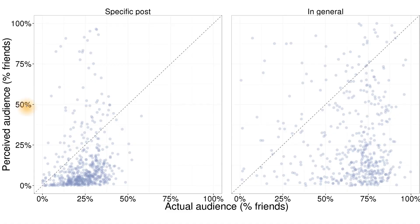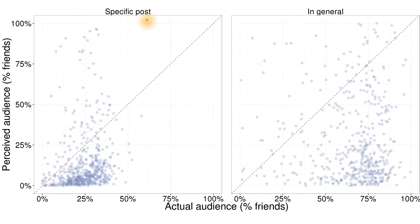So what we found when we plotted it this way was that all of the points are below this line of perfect accuracy — this diagonal line — really well below. One other thing I should note about this plot: we actually ran two different surveys. We ran one survey where we asked people about a single post, how many people do you think saw your post? But we also asked a different set of people, in general, how many people do you think see the content that you share on Facebook? And that's what this plot is showing — the in-general question.